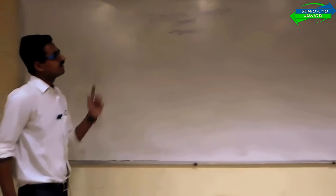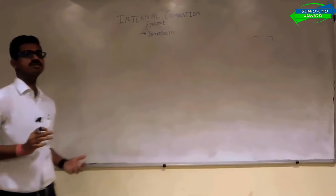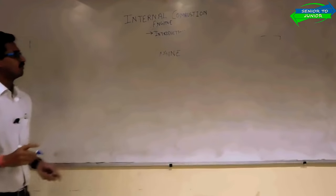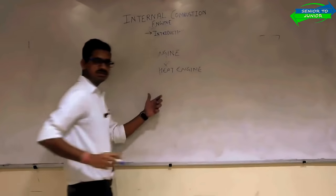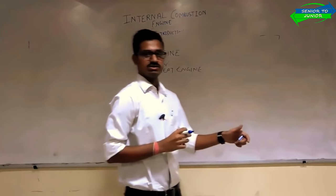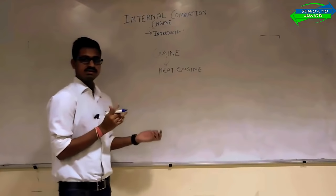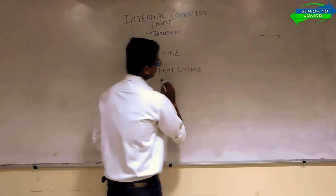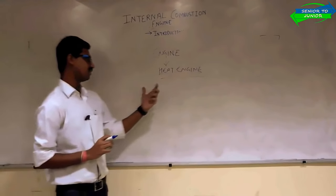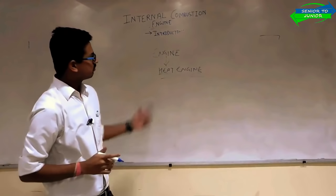Since we are studying internal combustion engine, we should first know what is an engine. Without understanding the meaning of engine, you cannot understand internal combustion engine. An engine is a device which converts one form of energy to another — any form of energy that can be converted into another form. What is a heat engine? A heat engine is a device that converts the chemical energy of the fuel into mechanical energy, and this is the process that happens in an internal combustion engine. The chemical energy generated from the fuel is converted into mechanical energy that pushes the piston and we get useful work. Heat engine converts the chemical energy of a fuel into mechanical work.